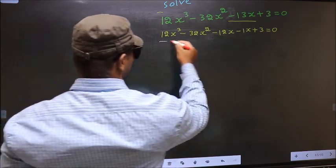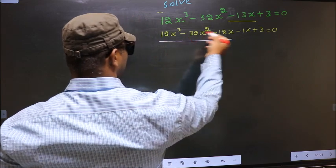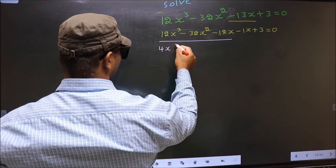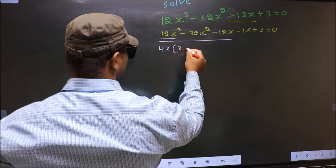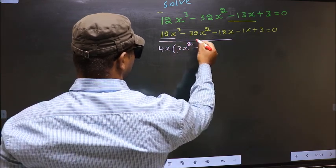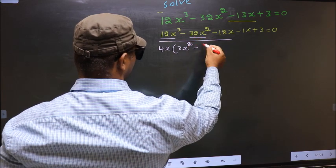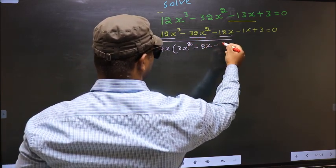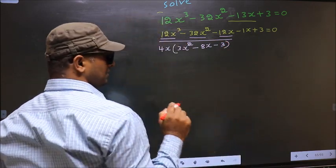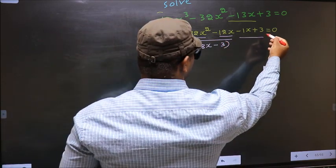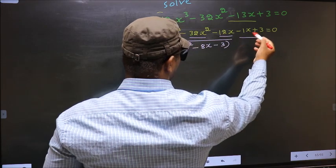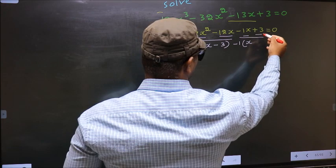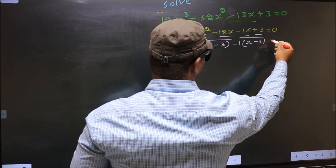Now from these first three terms, what can be taken out common is 4x. So you get 4x times (3x squared minus 8x minus 3). From the remaining two terms, what can be taken out common is minus 1, giving minus 1 times (x minus 3) equals 0.